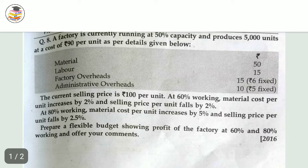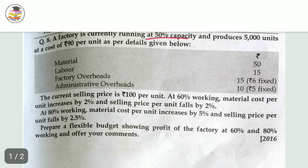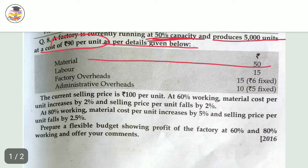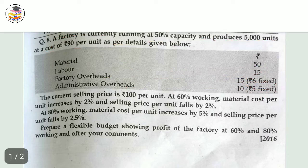Your question is: a factory is currently running at 50% capacity and produces 5,000 units at a cost of 90 rupees per unit as per the details given. The details are: material 50, labor 15, factory overhead 15 (of which some is fixed cost), and administrative overhead 10 (fixed cost) and 5. You need to understand that this is at 50% capacity, producing 5,000 units.